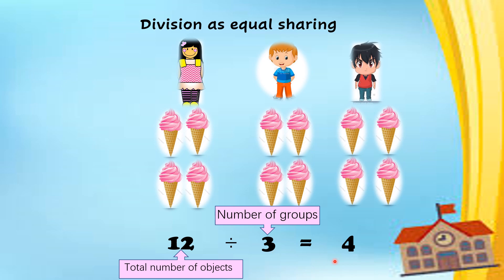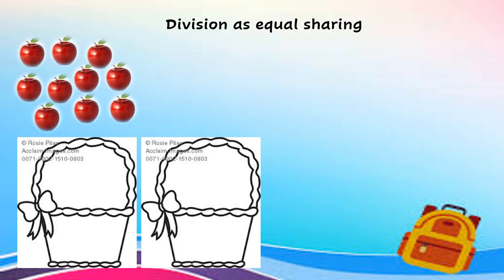And this four, answer four, is the number of ice cream that each person get. Bilangan ice cream yang setiap orang dapat. Number of object in each group. Dalam satu group ini ada empat ice cream.